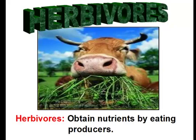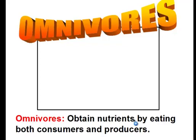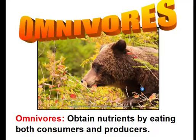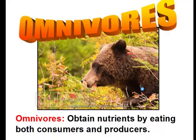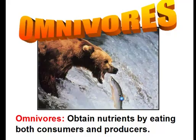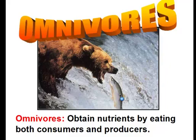Our third consumer category are called the omnivores. Omnivores eat everything — they obtain their nutrients by eating both consumers and producers, so they eat both animals and plants. One example of an omnivore is the bear. Here we have a bear munching on leaves and berries, eating plant material. However, bears can also eat animals — we have this bear eating a fish. Another example of an omnivore is yourself: if you eat dinner with steak and potatoes, you're eating both meat from a cow and the root of a plant, and if you have a salad too, you're eating more plant material. Humans are another example of omnivores.